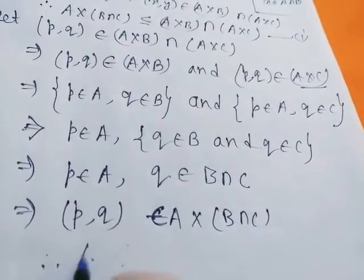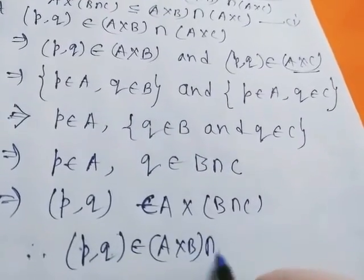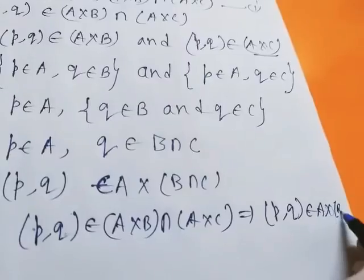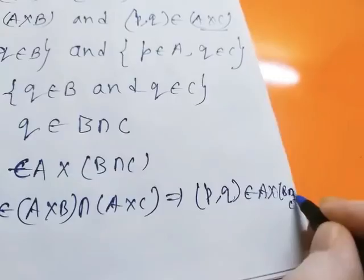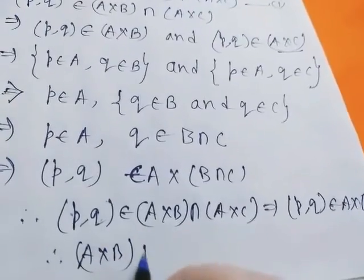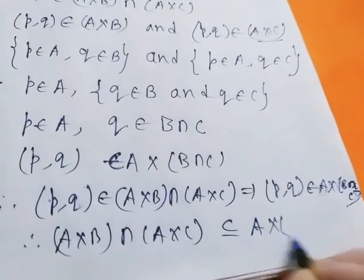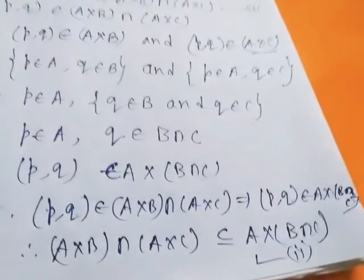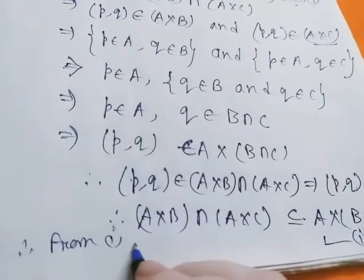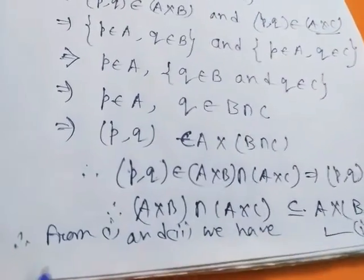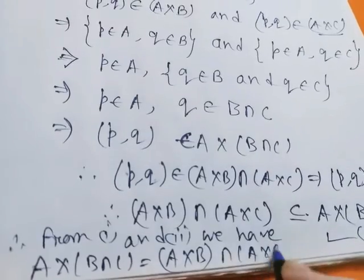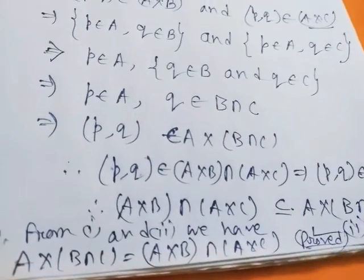Therefore, (p, q) belongs to (A cross B) intersection (A cross C) implies ordered pair (p, q) belongs to A cross (B intersection C). This implies (A cross B) intersection (A cross C) is a subset of A cross (B intersection C). We name this result (2). Therefore, from (1) and (2), we have A cross (B intersection C) equals (A cross B) intersection (A cross C). Proved. If you like this video, please share, subscribe, and comment.